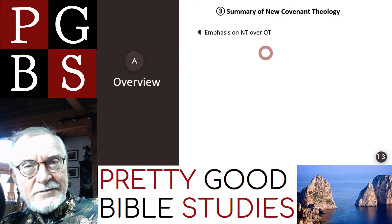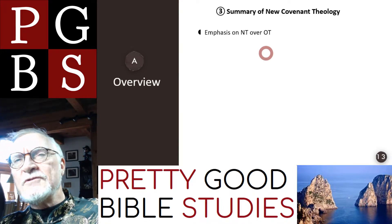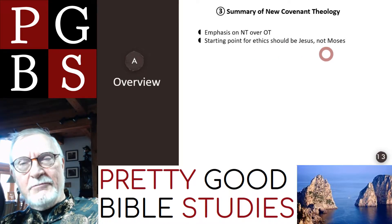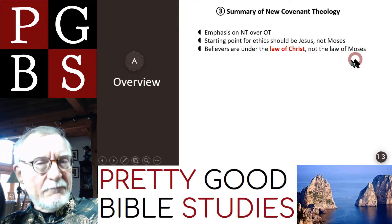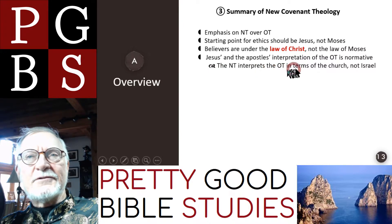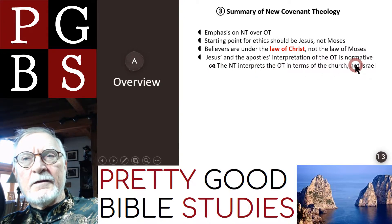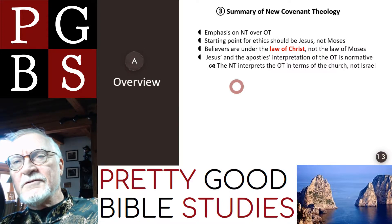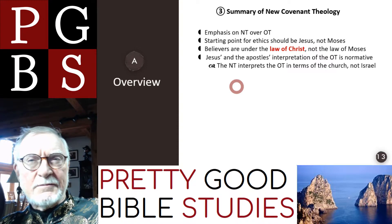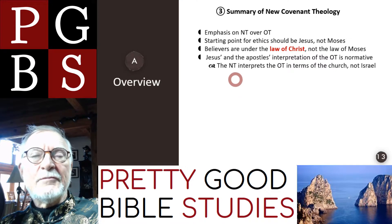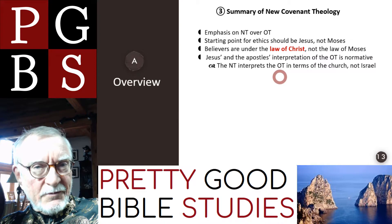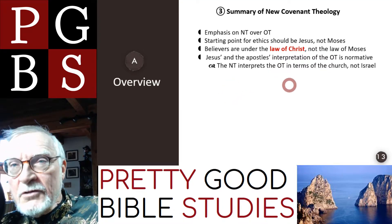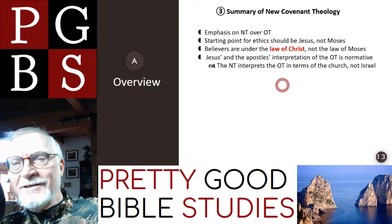That doesn't mean we overthrow the Old Testament or don't use it for types and moral instruction. Our starting point for ethics, say NCT people, should be Jesus and not Moses. Believers are under the law of Christ, not the law of Moses. The New Covenant theologians say Jesus and the apostles' interpretation of the Old Testament is normative — here reacting against dispensationalists, who say the New Testament does not interpret the Old Testament because the prophets were aiming at a future Jewish millennium. NCT says those prophecies should be fulfilled in the church, not in the millennium. When Jeremiah says in Jeremiah 31, 'I will write a new covenant on their hearts for the house of Israel and the house of Judah,' he was talking about the New Covenant church — and Hebrews clearly says that.